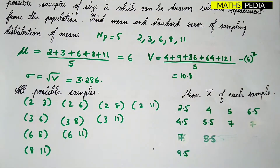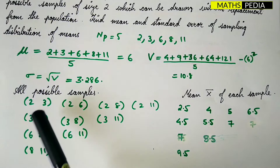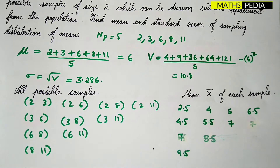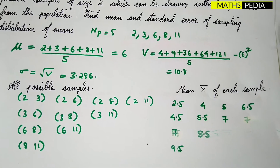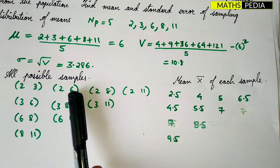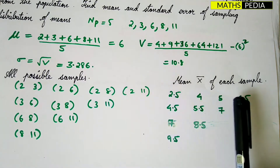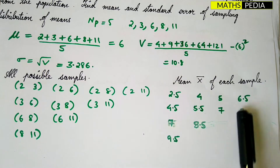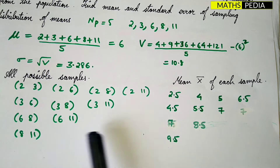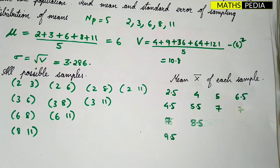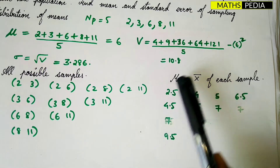Now find the mean x-bar of each sample. For (2,3): (2+3)/2 = 2.5; (2,6): 4; (2,8): 5; (2,11): 6.5; (3,6): 4.5; (3,8): 5.5; (3,11): 7; (6,8): 7; (6,11): 8.5; (8,11): 9.5. These are the x-bar values for each sample.